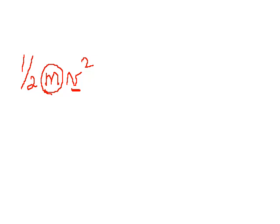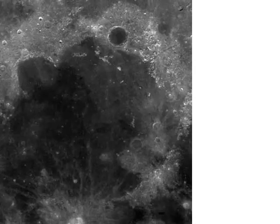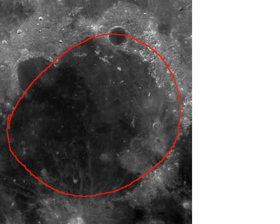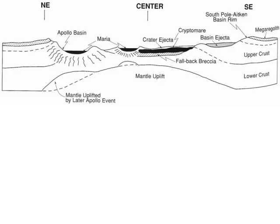Large objects and small objects can create the same size crater depending upon their velocities. Likely, Imbrium was formed by a relatively large object — assuming that all objects in the inner solar system are moving at about the same speed.